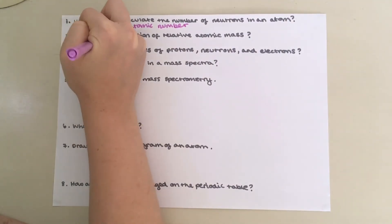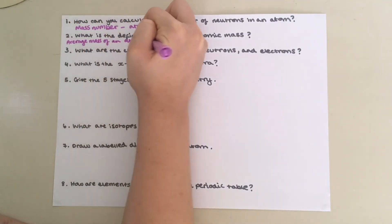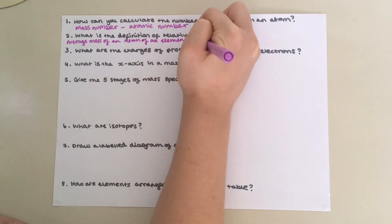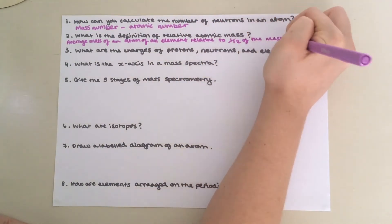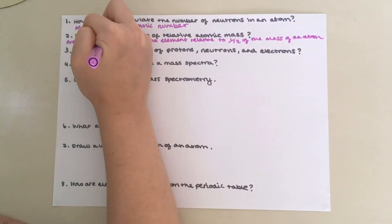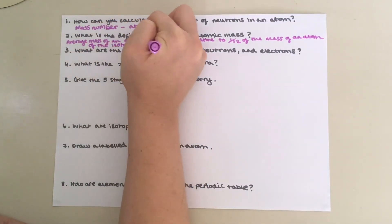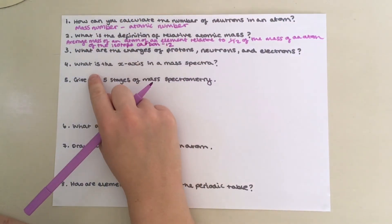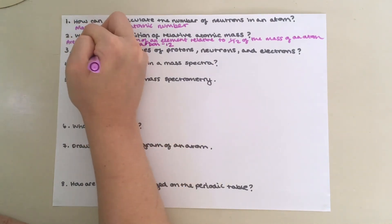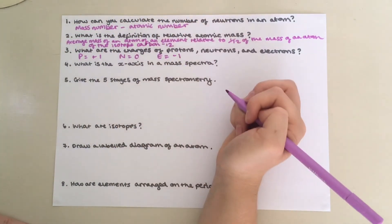Question 2: The definition of relative atomic mass is the average mass of an atom of an element relative to one twelfth of the mass of an atom of the isotope carbon-12. Question 3: Protons have a plus one charge, neutrons zero, and electrons minus one.